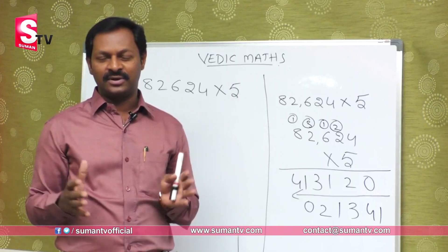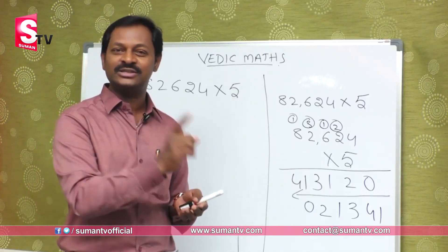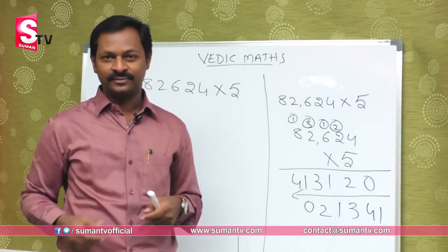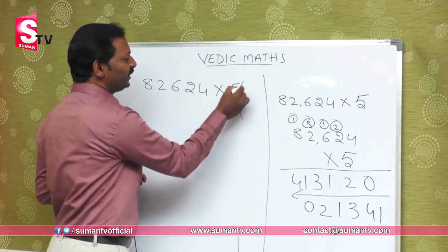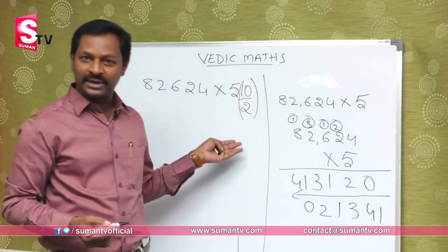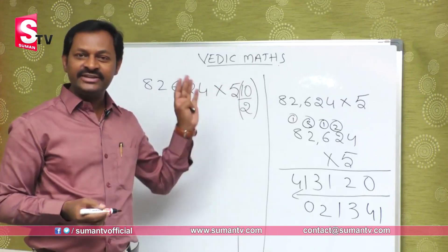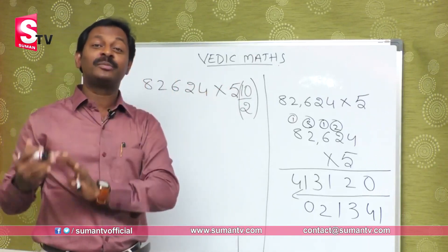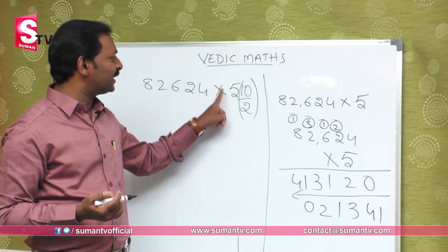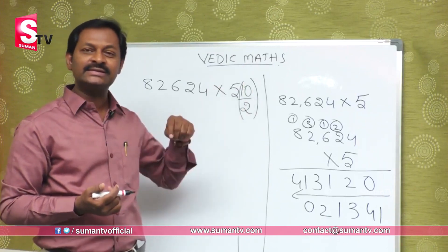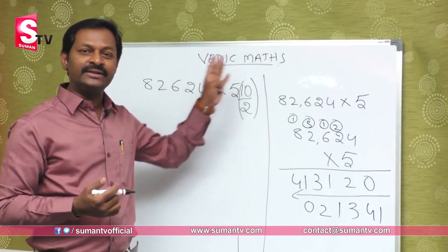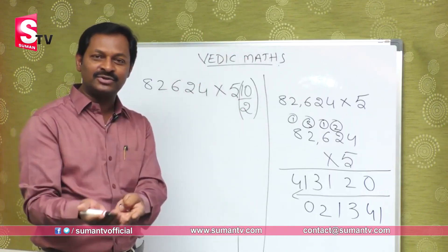So to multiply any number by 5, the Vedic method is: multiply by 10 — which simply means appending a zero — then divide by 2. For example, 82,624 multiplied by 5: first multiply by 10 to get 826,240, then divide by 2. Dividing by 2 left to right gives the answer directly.